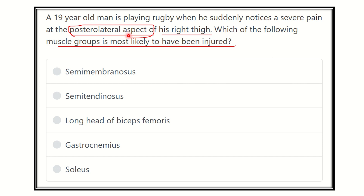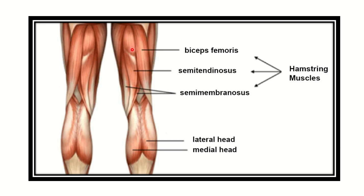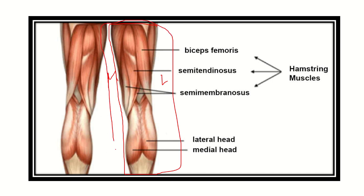Let's see — this is the right thigh and this is the left thigh. This side is the medial side and this side is the lateral side, and this total part is the posterior view of the lower limb. You can see there are three important muscles here.